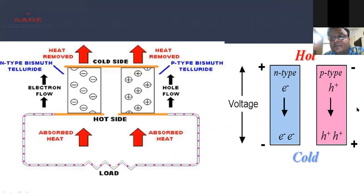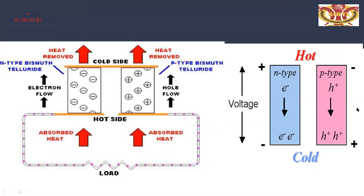In another diagram, the hot junction is represented with p-type (positive/hole carriers) and n-type (negative electrons). Voltage is produced on the hot-to-cold side due to the temperature difference. The p-type has smooth hole flow and the n-type has smooth electron flow passing through these sides, absorbing heat from the respective sides. The load is connected at the output sides, completing the circuit between the hot and cold junctions.